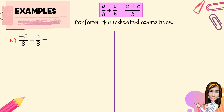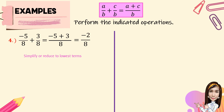For number 4, we have negative 5 over 8 plus 3 over 8. First, we add the numerators: negative 5 plus 3, then copy the common denominator, 8. As you notice, we have negative 5 plus 3 — they are unlike or different signs. So we subtract and follow the sign of the larger absolute value. The result is negative 2 over 8. Then we simplify: the greatest common factor is 2. Negative 2 divided by 2 is negative 1, and 8 divided by 2 is 4. So the lowest term is negative 1 over 4.